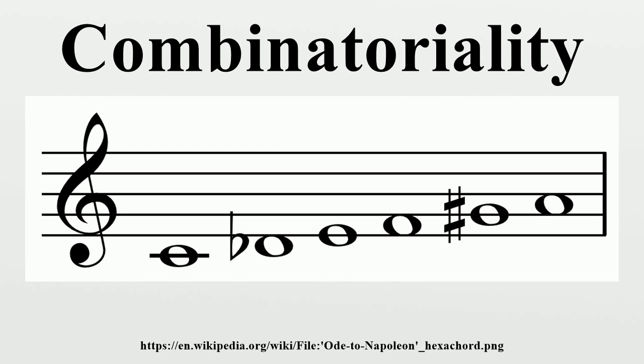Any hexachord which contains a zero in its interval vector possesses transpositional combinatoriality. For example, there is one hexachord which is combinatorial by transposition: 0-1-3-4-5-8, whose complement is 6-7-9-T-E-2. This hexachord contains tritones.